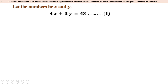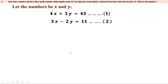Three times the first number minus 2 times the second number equals 11, giving us 3X minus 2Y equal to 11. Let us consider this as the second equation. We know how to solve these equations: if the coefficients of X or Y in both equations are the same, we can subtract. Otherwise we make the coefficients equal. In all previous problems we made the coefficients of X the same; here let us try to make the coefficients of Y the same.